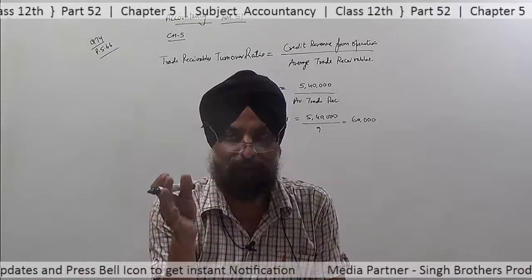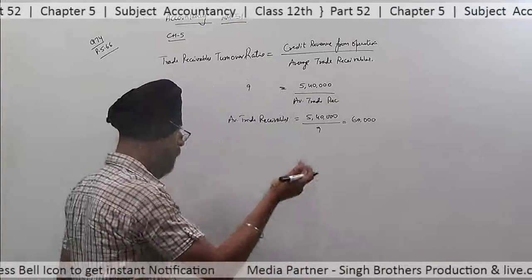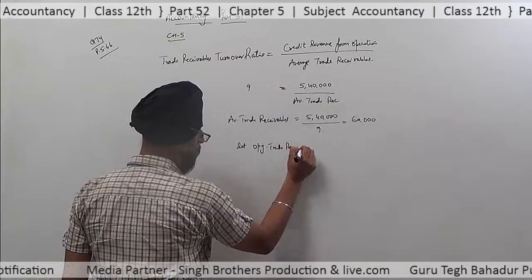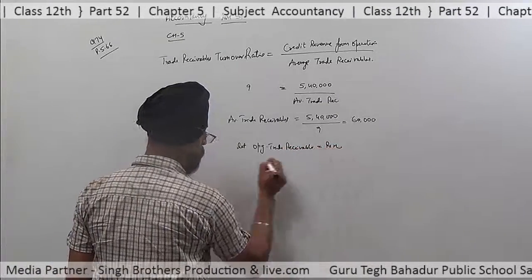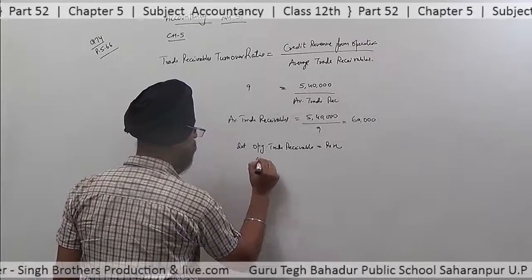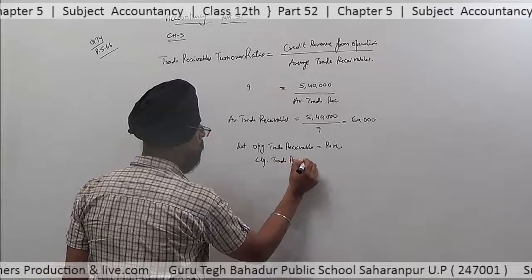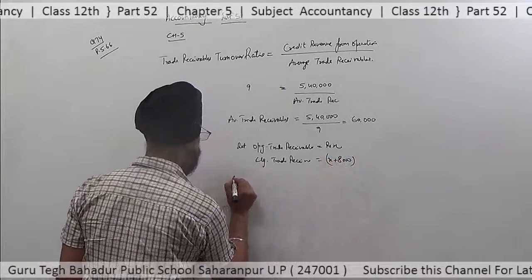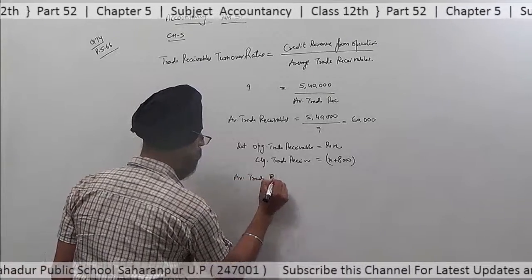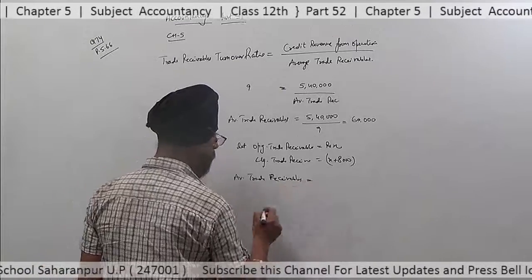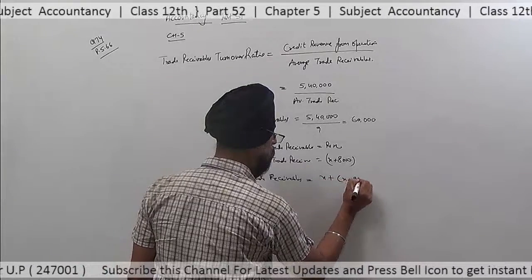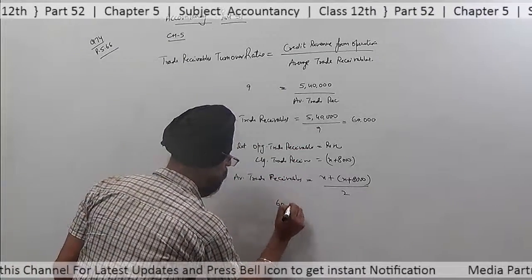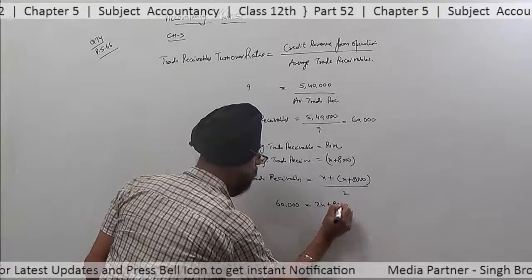The condition given is that closing trade receivables are 8,000 more than the opening. So let opening trade receivables equal X, and closing trade receivables equal X plus 8,000. Average trade receivables equals opening plus closing upon 2, which we already calculated as 60,000.